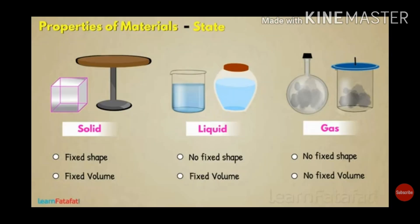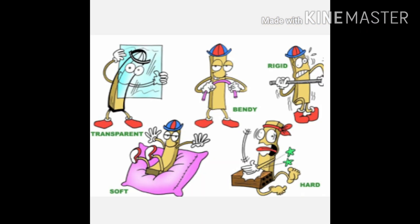Depending upon different states — solid, liquid, and gas — things can be classified according to their fixed shape or fixed volume. Substances with fixed shape and fixed volume are classified as solid. If they do not have a fixed shape but have a fixed volume, they are classified as liquid, as they take the shape of the container. Gases do not have fixed shape or fixed volume.